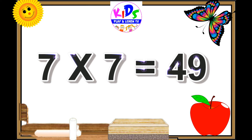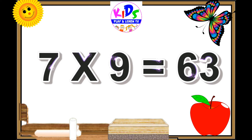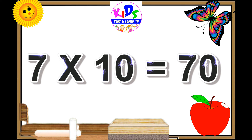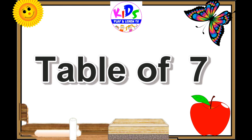Seven sixes are forty-two. Seven sevens are forty-nine. Seven eights are fifty-six. Seven nines are sixty-three. Seven tens are seventy.